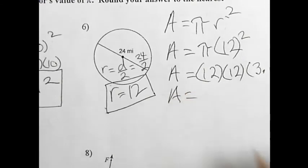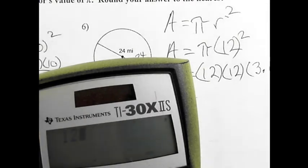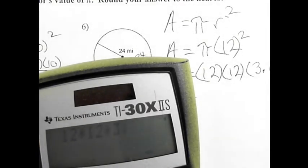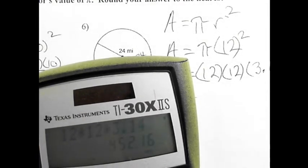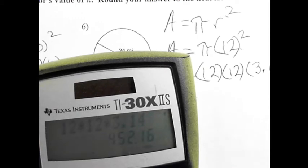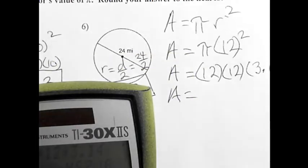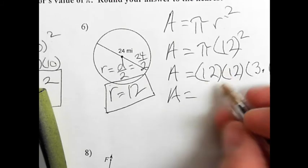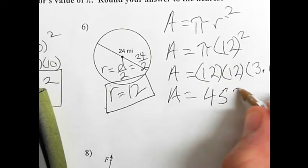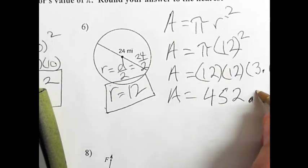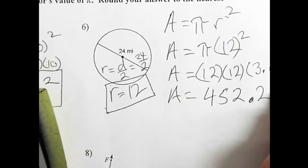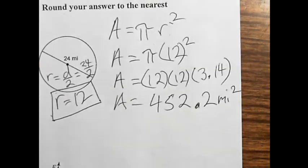If I plug that in the calculator, 12 times 12 times 3.14, I'll get 452.2 if I round up. So I get 452.2 miles squared if I round up.